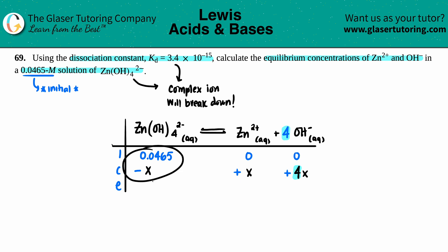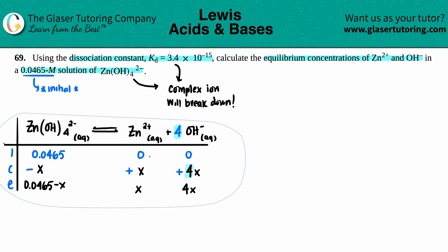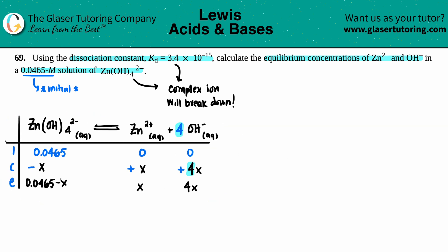E stands for Equilibrium — bring it all together. The complex ion is 0.0465 minus x; zinc is 0 plus x, which is just x; and hydroxide is 0 plus 4x, which is just 4x. Now we use our equilibrium values in the K expression. Any K value is products over reactants — only aqueous and gas species are included, and they're all aqueous here, so we're good. We have two species on top and one on the bottom.